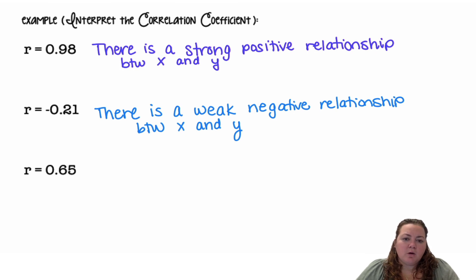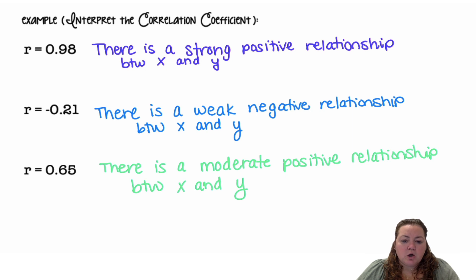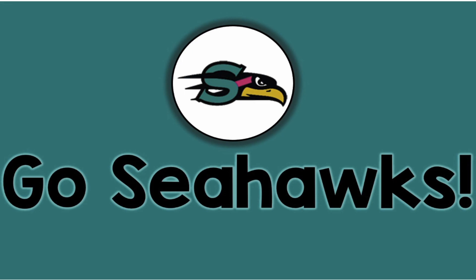And if you knew what X and Y were, you would put those context pieces like the actual name of the variable there. R equals 0.65, we'd say that's moderately strong. So there is a moderate positive relationship between X and Y. All right, go Seahawks!